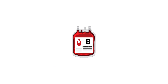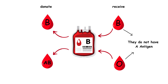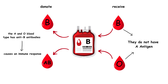People with type B blood can receive blood from type B and type O donors, since the absence of A antigens in these blood types prevents a reaction from the anti-A antibodies. They can donate blood to people with blood type B and AB, because the A and O blood types have anti-B antibodies in the plasma which causes an immune response.